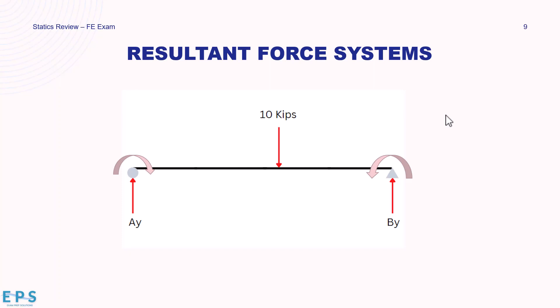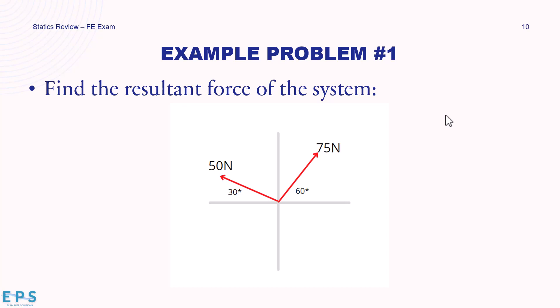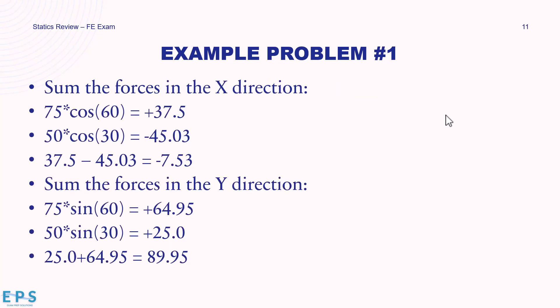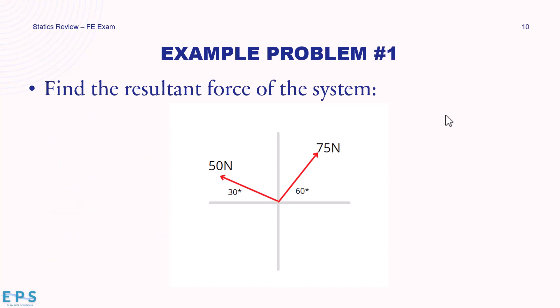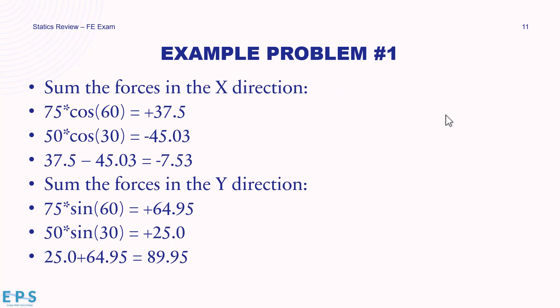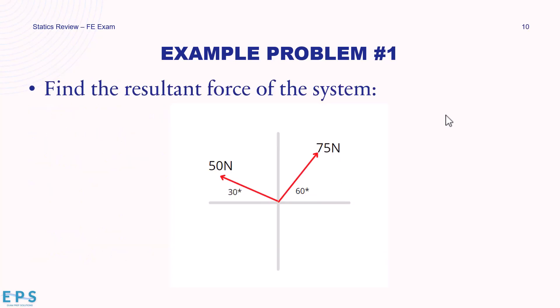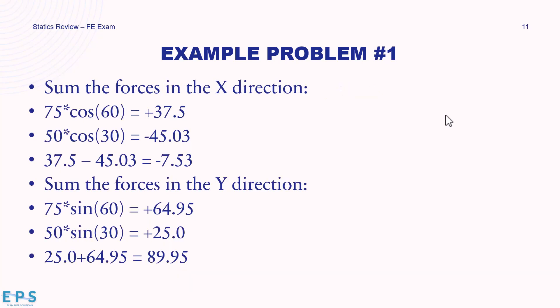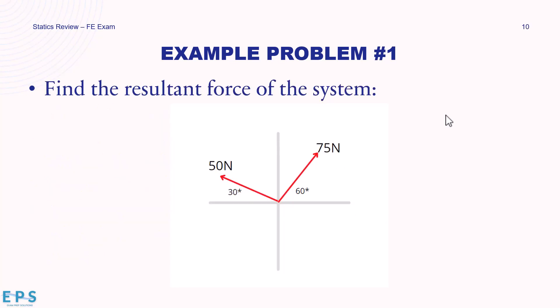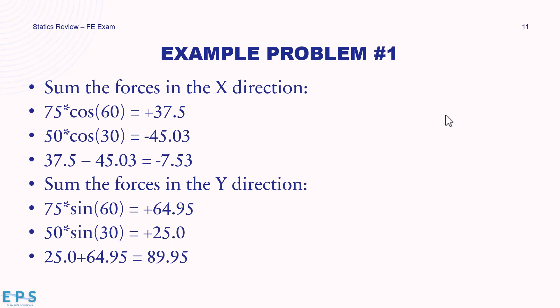Example problem 1: find the resultant force of a system with 50 newtons on the left at 30 degrees and 75 newtons on the right at 60 degrees. To sum forces in the x direction, we can't just add the magnitudes because they're at angles — we need to find components using trig. The x component of the 75 N force is 75 × cos(60°) = +37.5 N, and the x component of the 50 N force is 50 × cos(30°) = −43.3 N, giving a sum of −7.53 N in x.